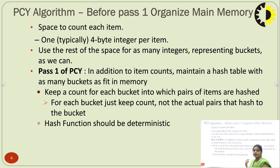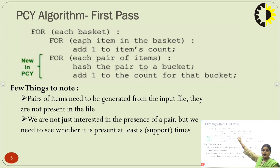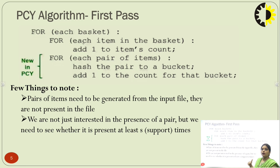The hash function used in this algorithm should be deterministic. During the first pass, for each item in a basket we add 1 to the item count, and for each pair of items we hash the pair to a particular bucket and add 1 to the count of that bucket. This hashing of pairs to buckets is what is new in the PCY algorithm.